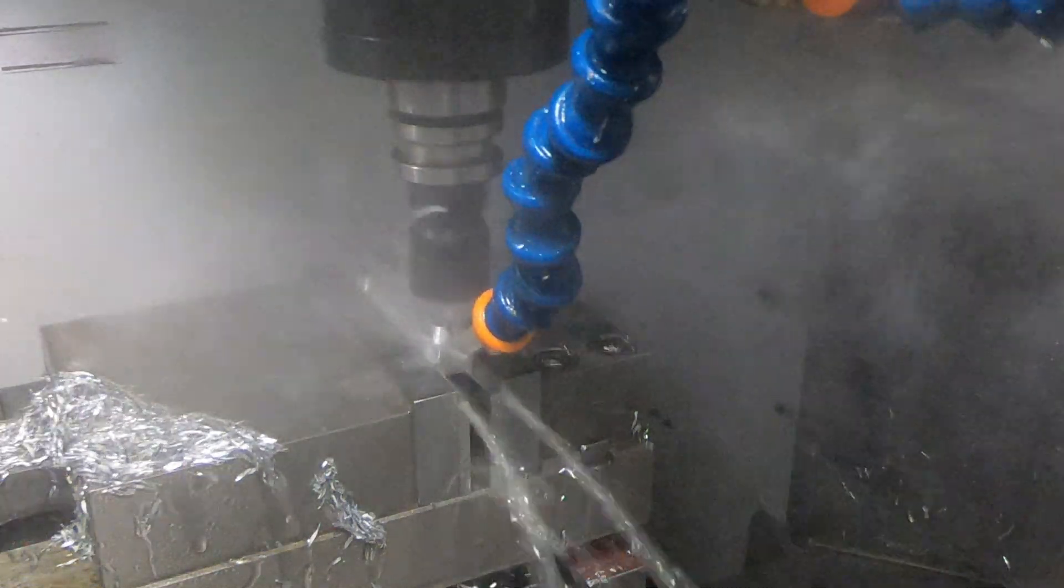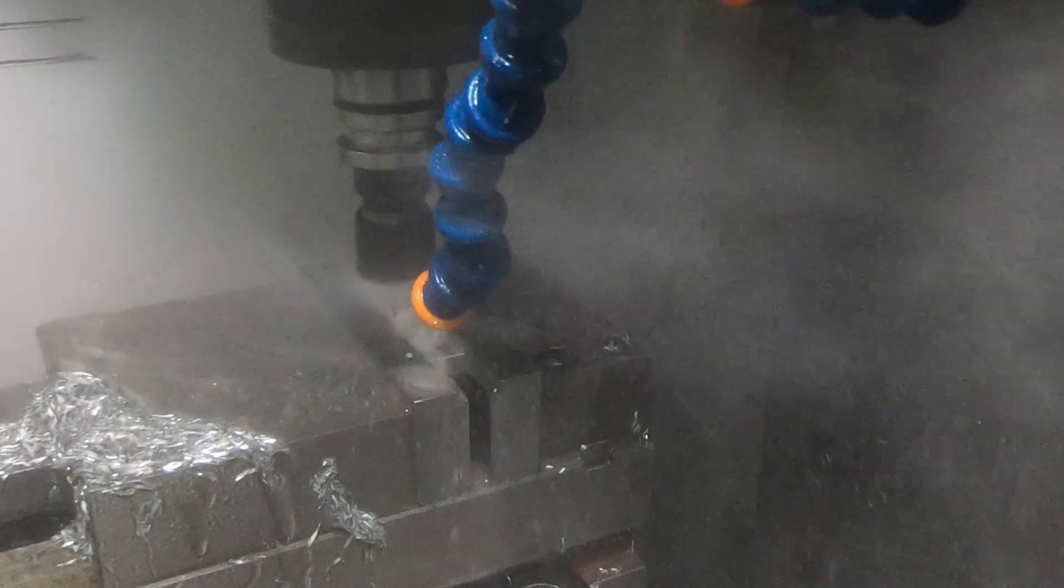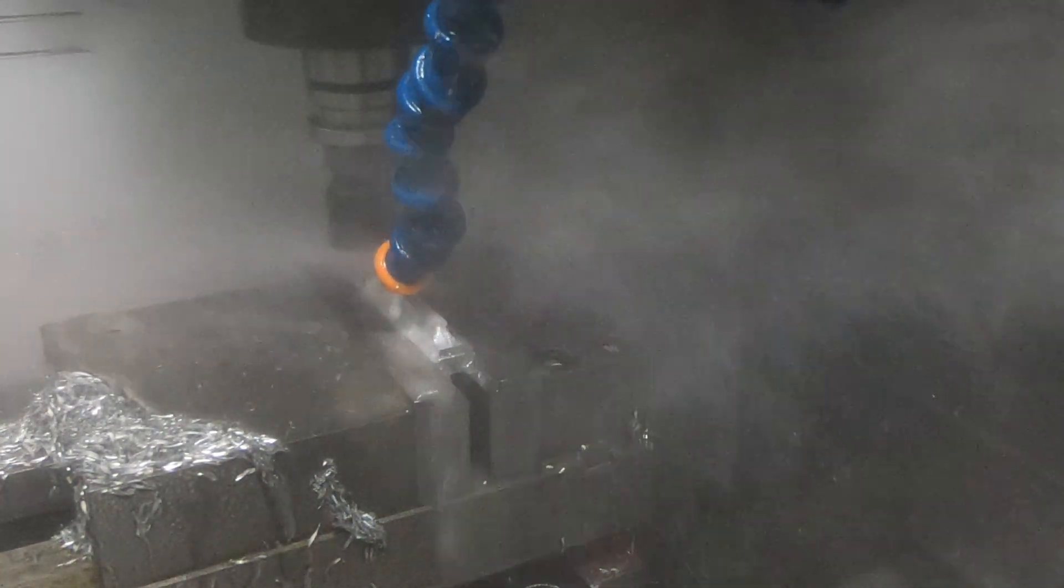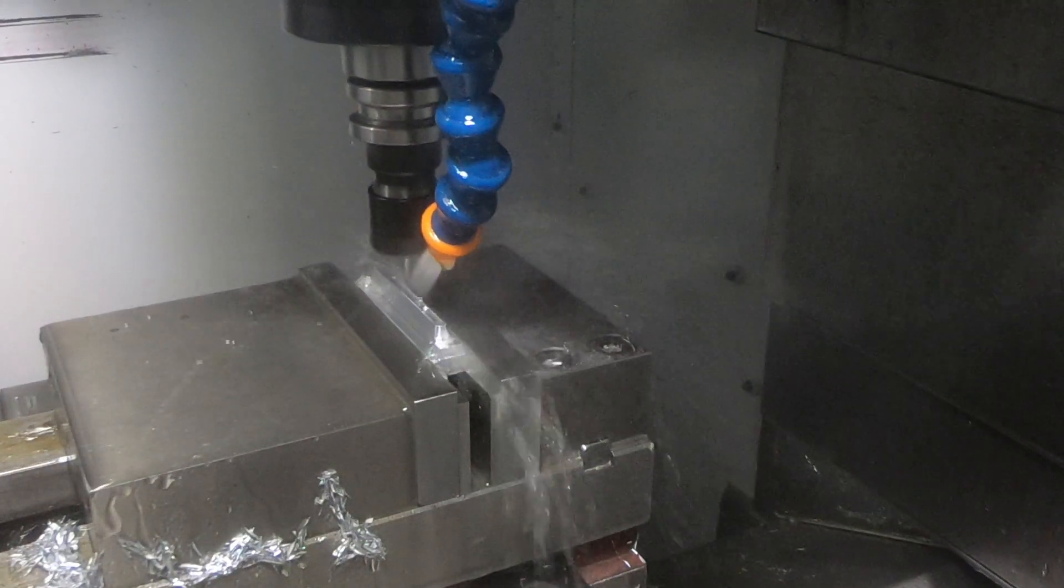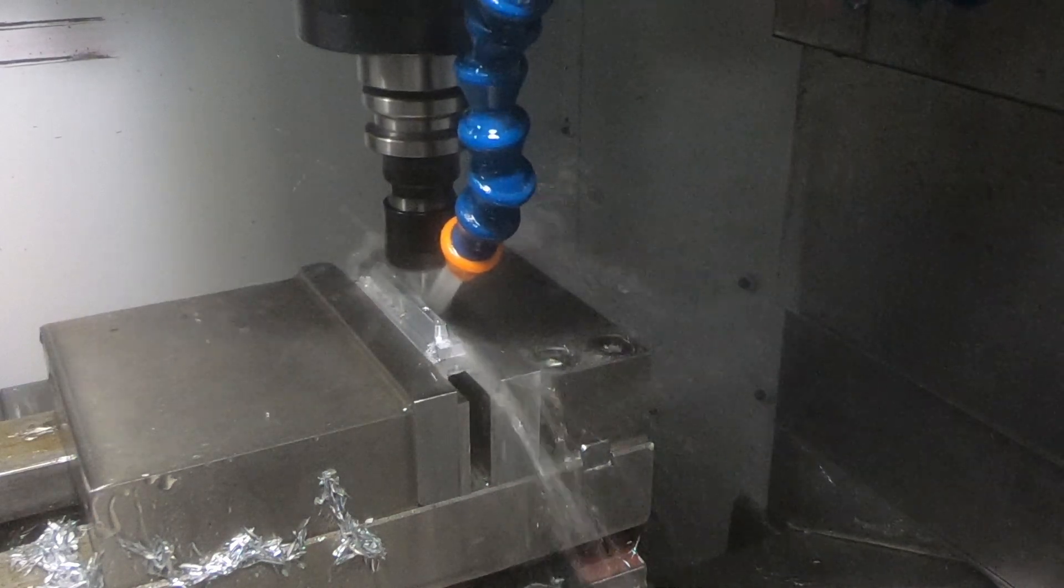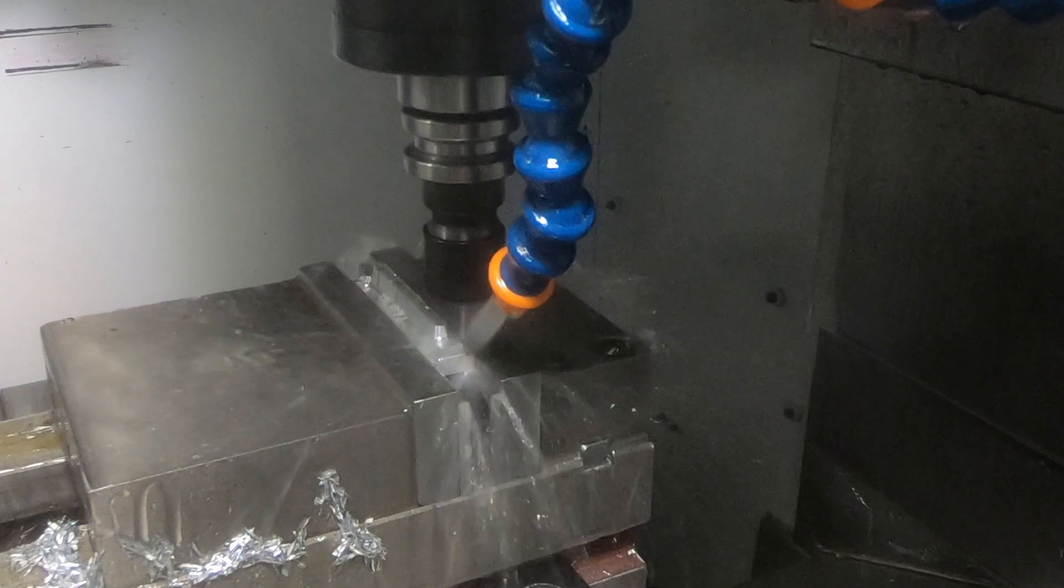This is using a one-eighth inch ball end mill at thirty thousand RPM to mill most of the slope sides so that it'll be smooth. And then switching to a one-eighth inch flat end mill to clean up the sections that I couldn't get with the ball end mill near the bottoms.